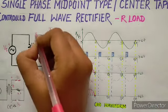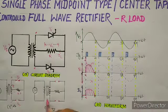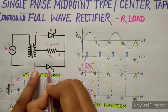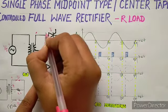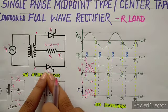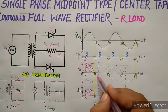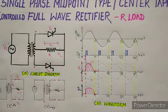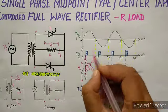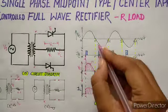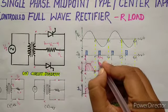जब तक T2 को gate pulse नहीं देंगे, तब तक load voltage और load current दोनों 0 रहेंगे। Pi plus alpha angle पर — यानी negative half cycle में भी same alpha delay के बाद — T2 को gate pulse देंगे। Gate pulse मिलते ही T2 ON हो जाएगा।